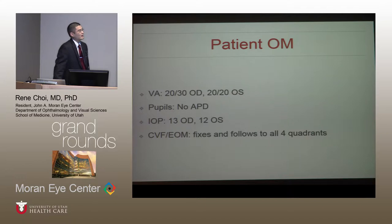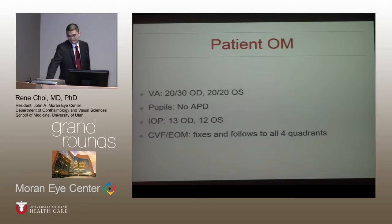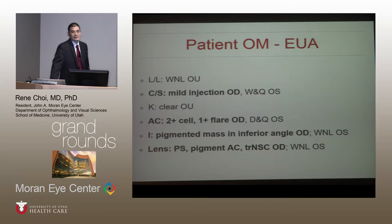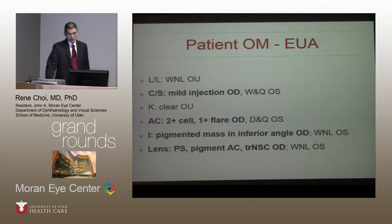Upon presentation at the outside ophthalmologist's office, his visual acuity was 20/30 in the right eye and 20/20 in the left eye. Pupils, pressure, extraocular movements, and visual fields were all within normal limits. On examination, he had about one plus injection in the right eye, two plus cell, and one plus flare in the anterior chamber of his right eye. He had this very particular pigmented mass in the inferior angle of his right eye. He also had some posterior synechiae, as well as pigment on the anterior capsule and trace nuclear sclerotic cataracts in the right eye only.